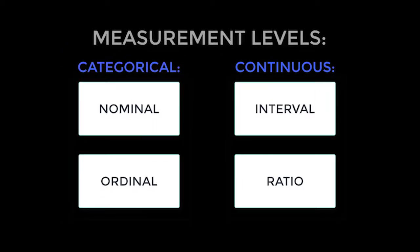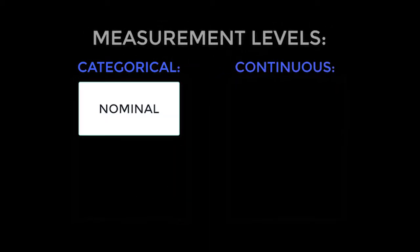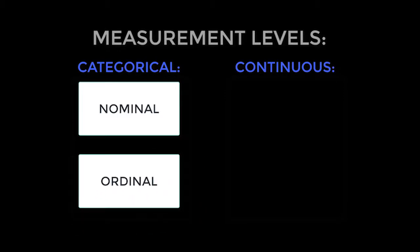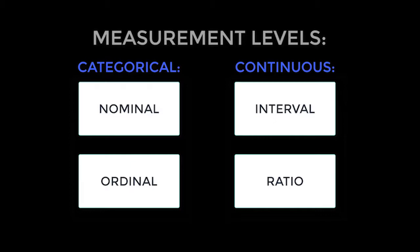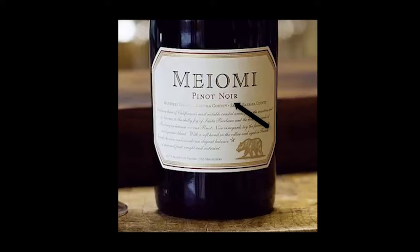In review, we have seen four levels of measurement used in quantitative research methods: nominal, ordinal, interval, and ratio. Nominal is categorical measurement in name only — order doesn't matter. Ordinal is categorical measurement where order does matter. Interval is continuous measurement with equal intervals. And ratio is continuous measurement with equal intervals and also an absolute zero. An easy way to remember the levels of measurement in their proper order is to think of the wine Pinot Noir — the acronym NOIR keeps the levels in their proper order.